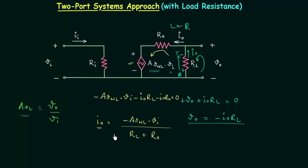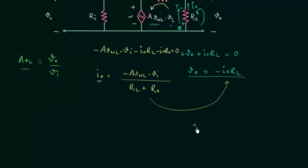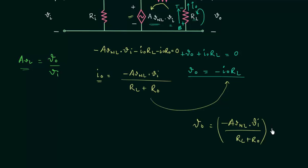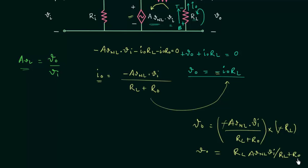So this is the expression for the output current, and I will substitute this value back. The output voltage Vo is equal to minus of AVNL multiplied with Vi divided by (RL plus Ro), and don't forget the negative sign. Multiplying by minus RL, the negative signs become positive, and we have the final value of the output voltage Vo equal to RL·AVNL·Vi divided by (RL plus Ro).